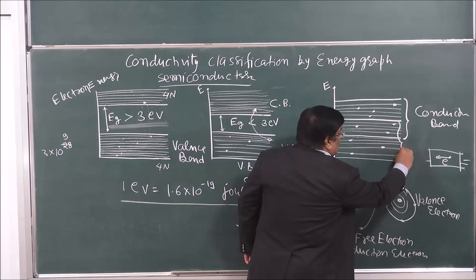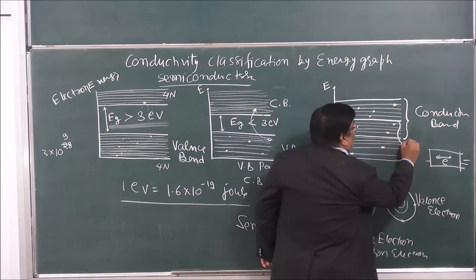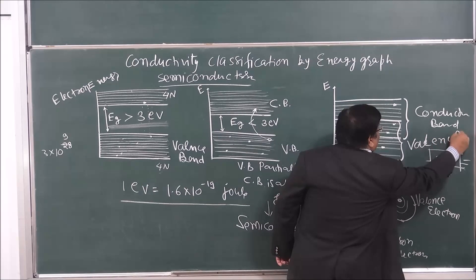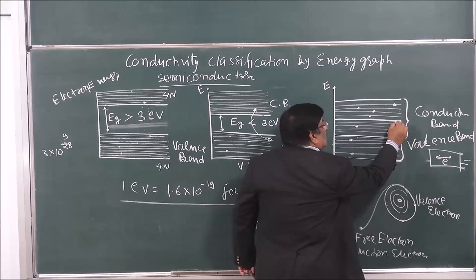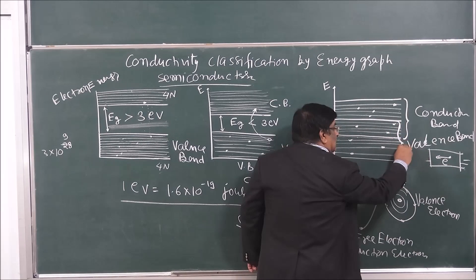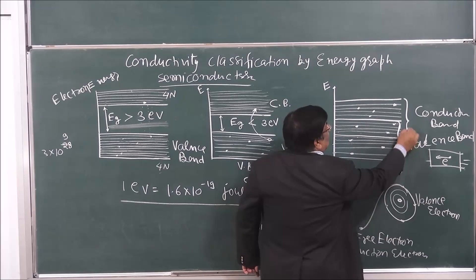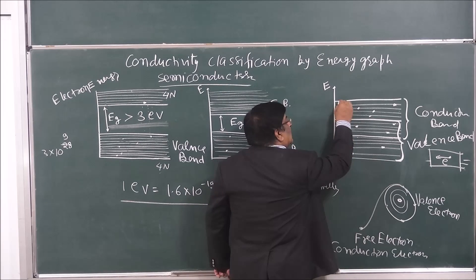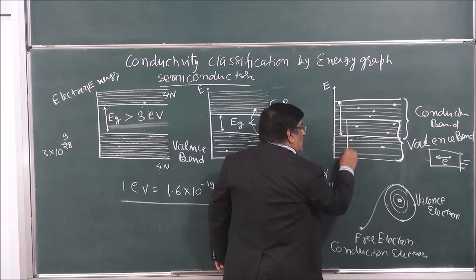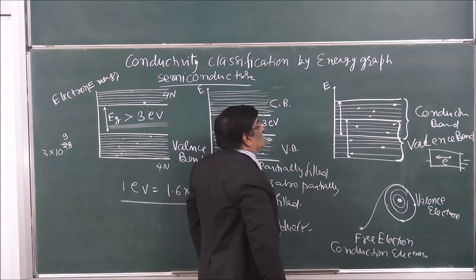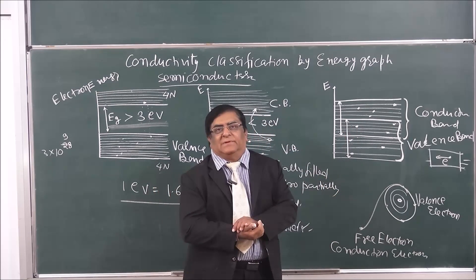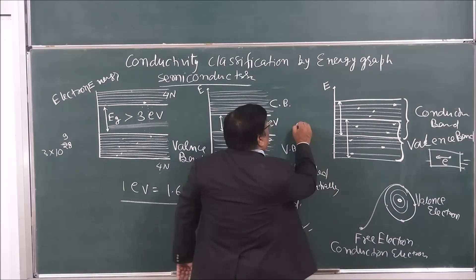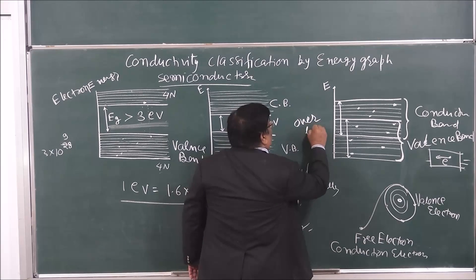All these electrons are doing the job of valency, so this region is the valence band, and this upper region is the conduction band. Where is the energy gap? There is no energy gap — in fact there is a negative energy gap. We call it an overlap. Remember this word: overlap. All the electrons in this overlap region are able to do both jobs.